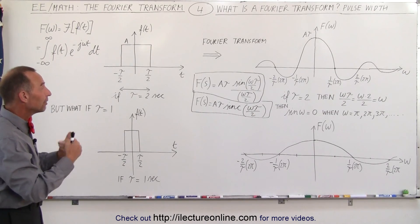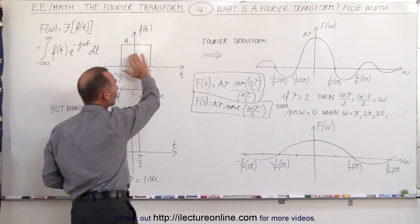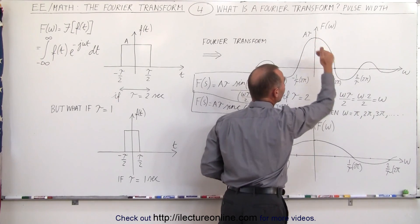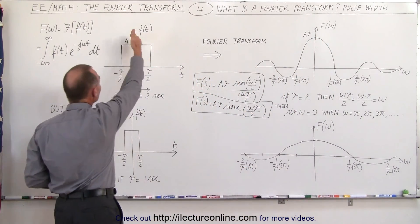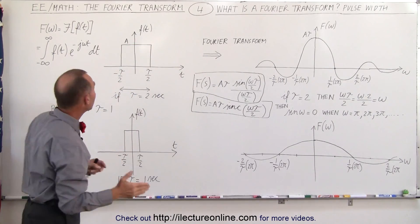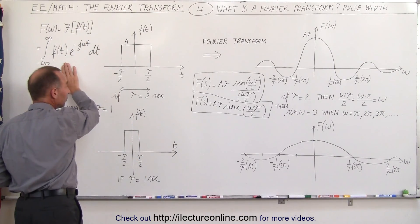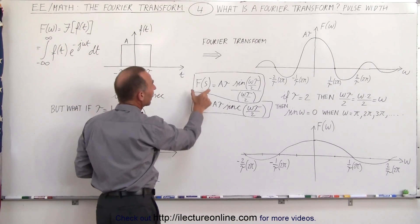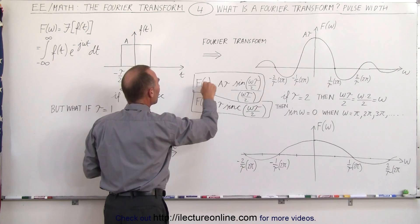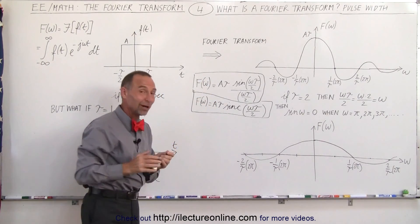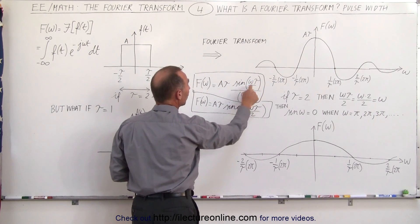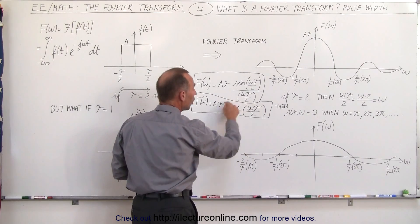We already saw in the previous videos that when we have a single pulse and we take the Fourier transform, we get a function where the amplitude versus frequency is represented from a single pulse. The transformed function in the frequency domain — noting that we use omega, not s as in the Laplace transform — is equal to the sinc function. The sine of omega·τ/2 divided by omega·τ/2 is simply called the sinc function.